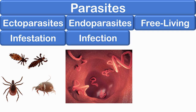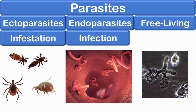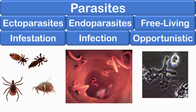Endoparasitism is also called infection. Free-living parasites are the ones which can live independent of the host — for example, Acanthamoeba, Balamuthia, and Naegleria. There is no major reservoir host, as these amoebae species are free-living in the environment and are only opportunistically parasitic.